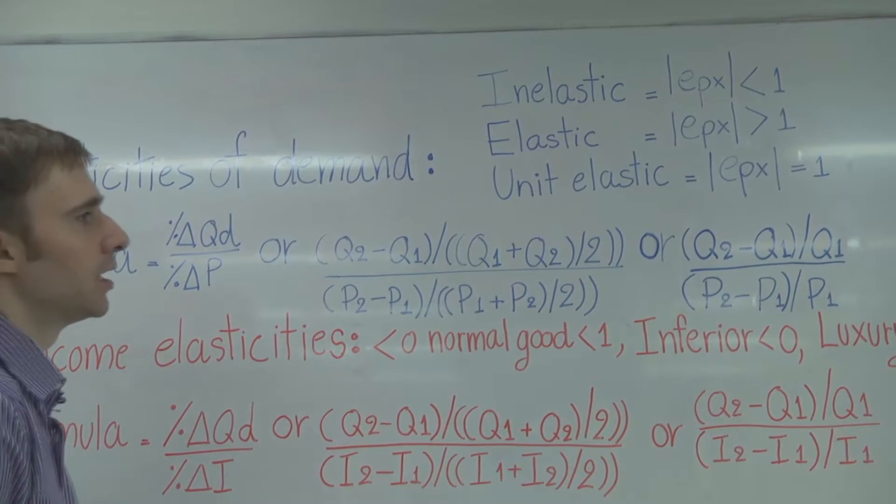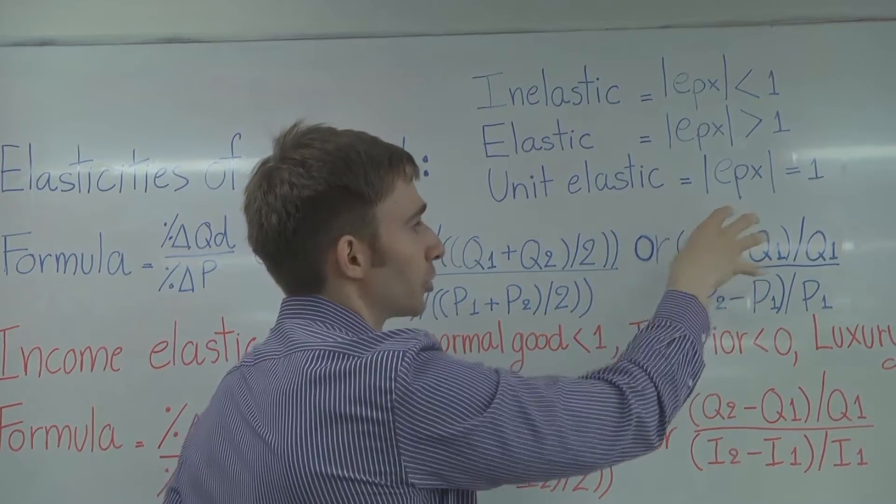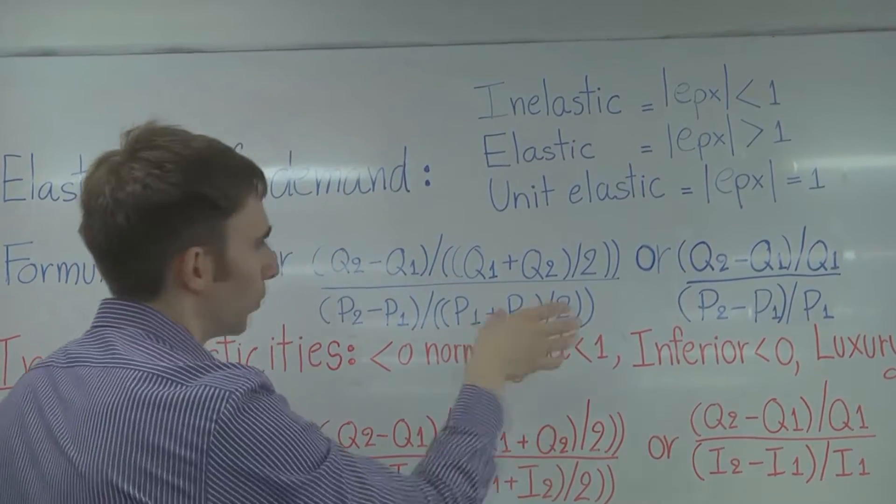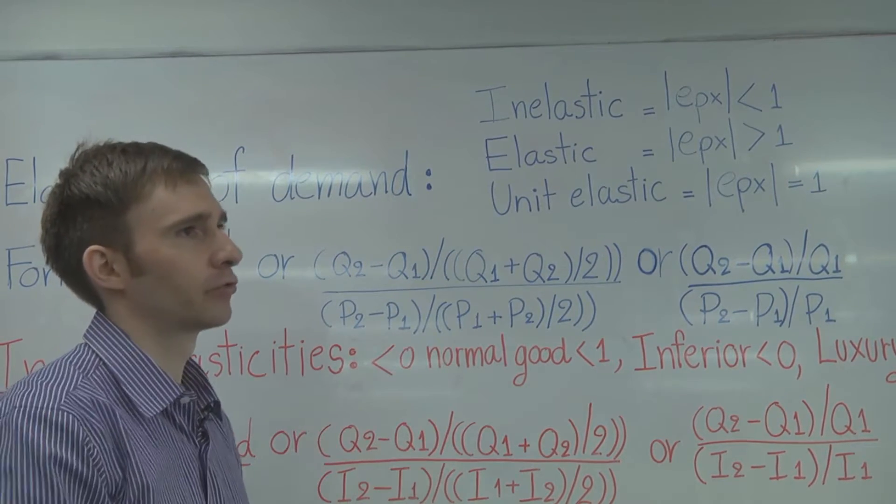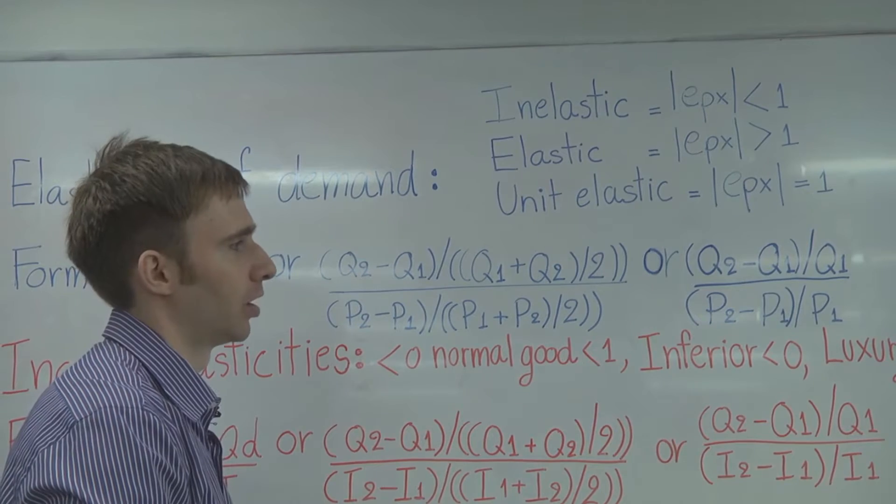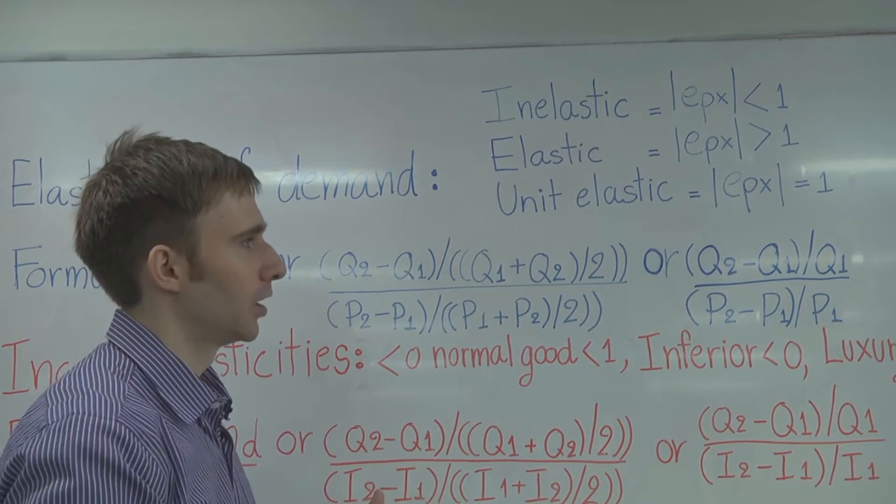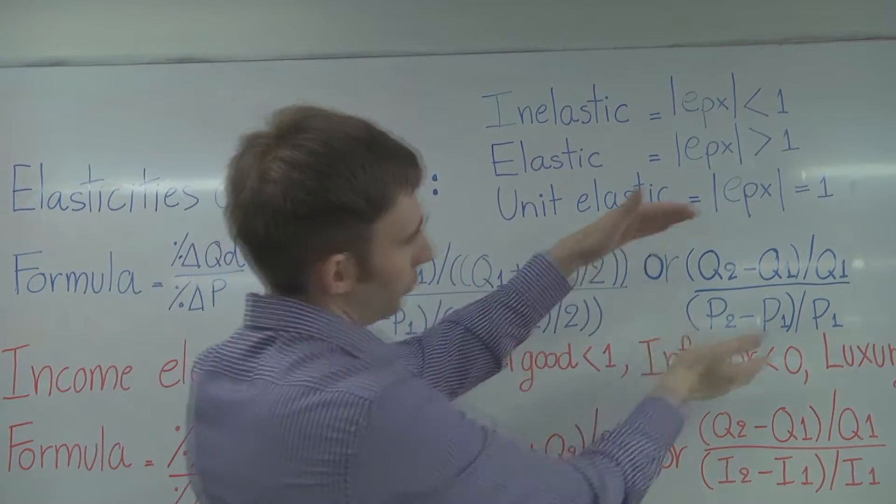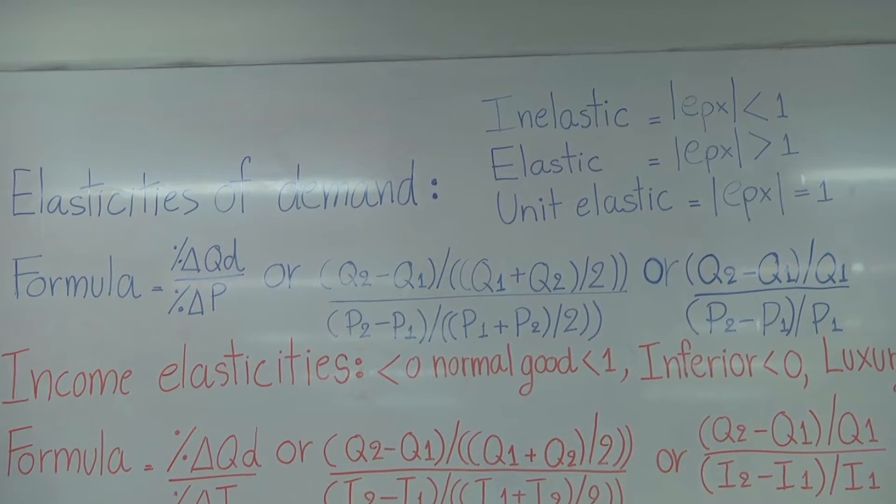But again, this number will give you a larger number, a number further away from zero, where with the exact same data, if I use this formula, it's going to give me a more conservative number, a number closer to zero. So if I have an extreme positive or extreme negative number, this would be less extreme, and this would be more extreme. The same data again.